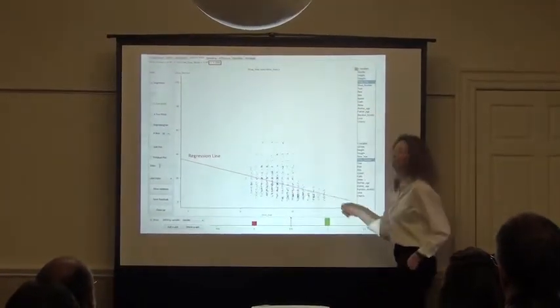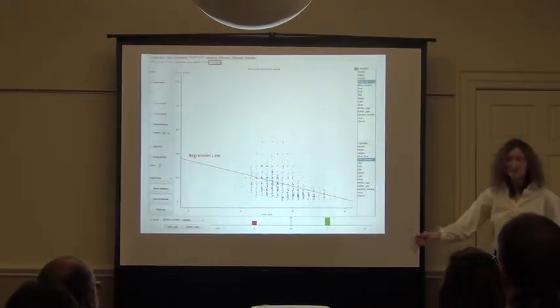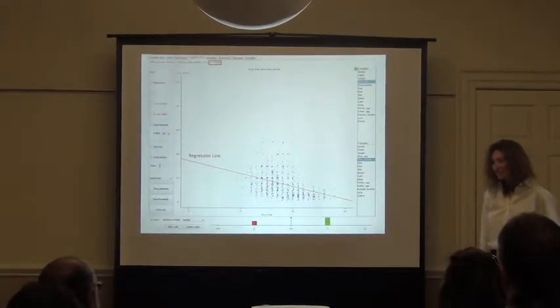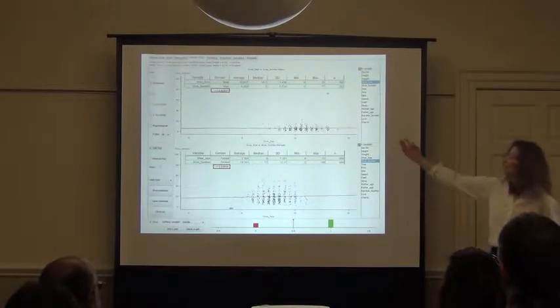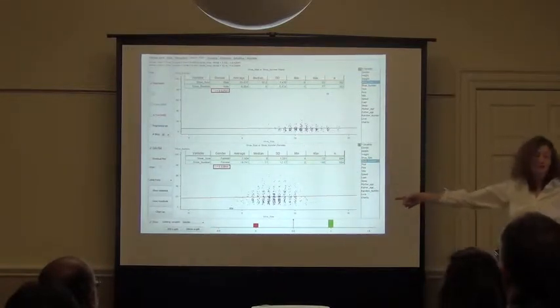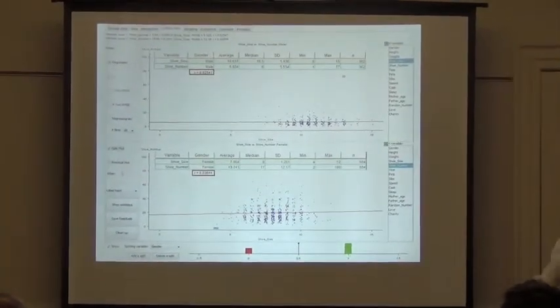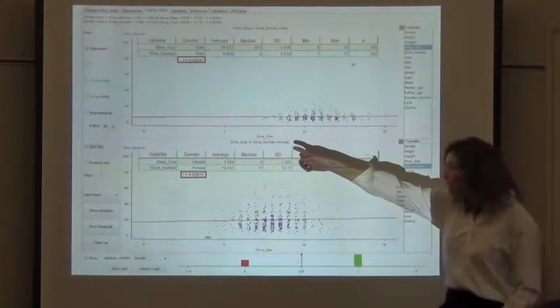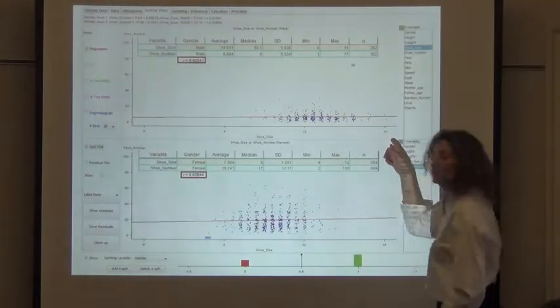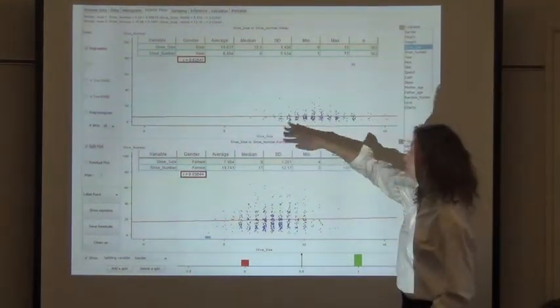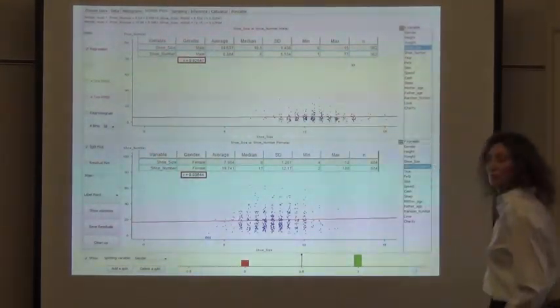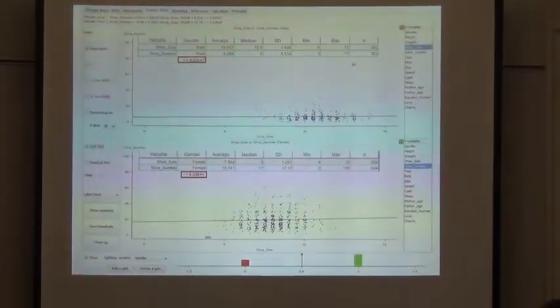So how would you test whether that's true? That's the confounding factor. What do you think you would do? You'd separate the guys from the girls. Exactly. So let's do that. And when you do that, you see that there's a completely flat line there. So we confirmed what he said very good. That there's no, among the guys, the shoe size has no correlation to how many pairs you own. Same with girls.